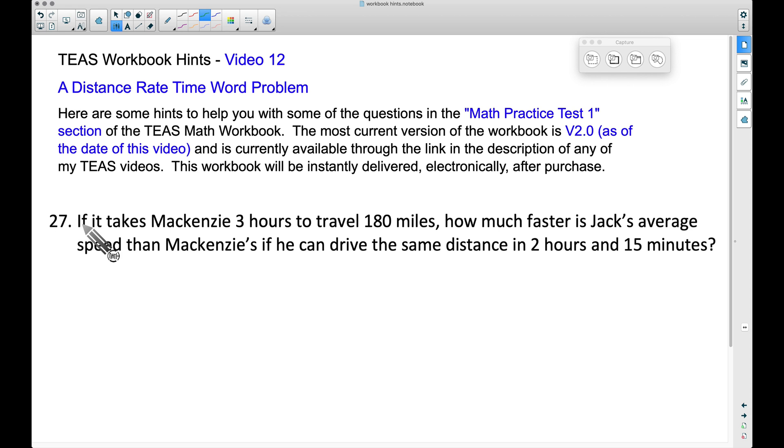Number 27 says if it takes McKenzie three hours to travel 180 miles, how much faster is Jack's average speed than McKenzie's if he can drive the same distance in two hours and 15 minutes?